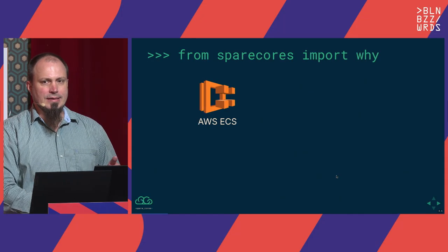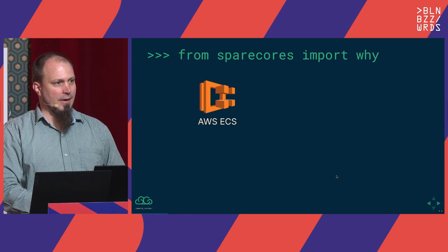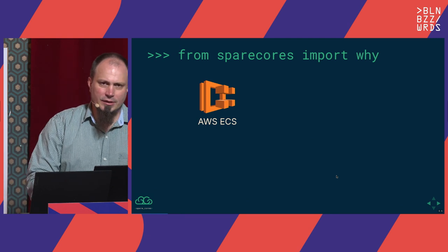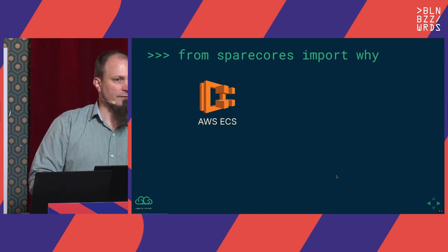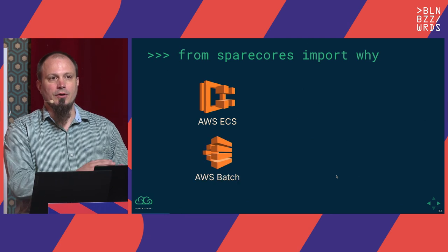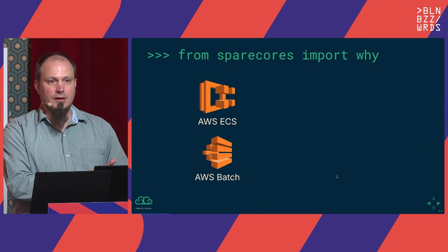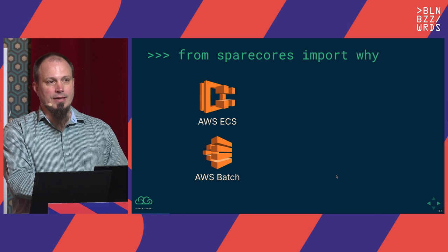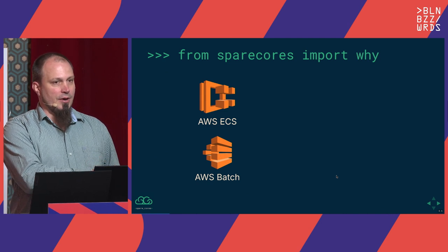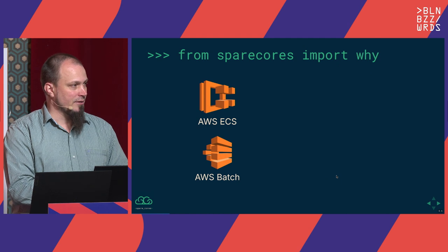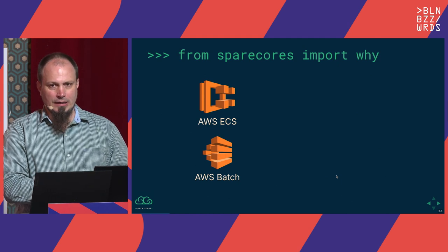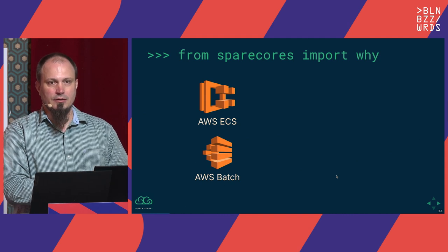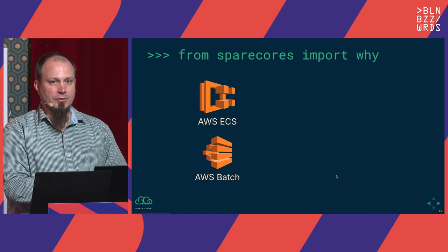Many years ago we were using ECS with some sketchy bash scripts to spin up EC2 nodes and run our jobs there. It was relatively fragile and not a lot of fun to work with. So we were relatively excited when AWS Batch was announced, with the promise of managing the infrastructure for us — we just define the task definitions, and AWS will create the cluster, spin up the instances as needed.